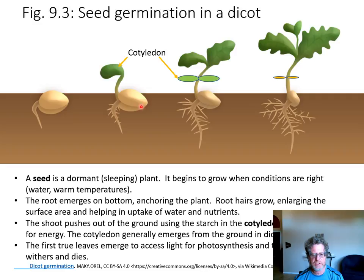A structure sometimes called the seed leaf or the cotyledon comes out, and in a dicot it usually comes out of the ground — you have two cotyledons, so 'di' means two. Then the true leaves emerge. The function of the cotyledon is to take all the starch stored inside the seed and remobilize it into the growing plant until the leaves come out and it can do photosynthesis.